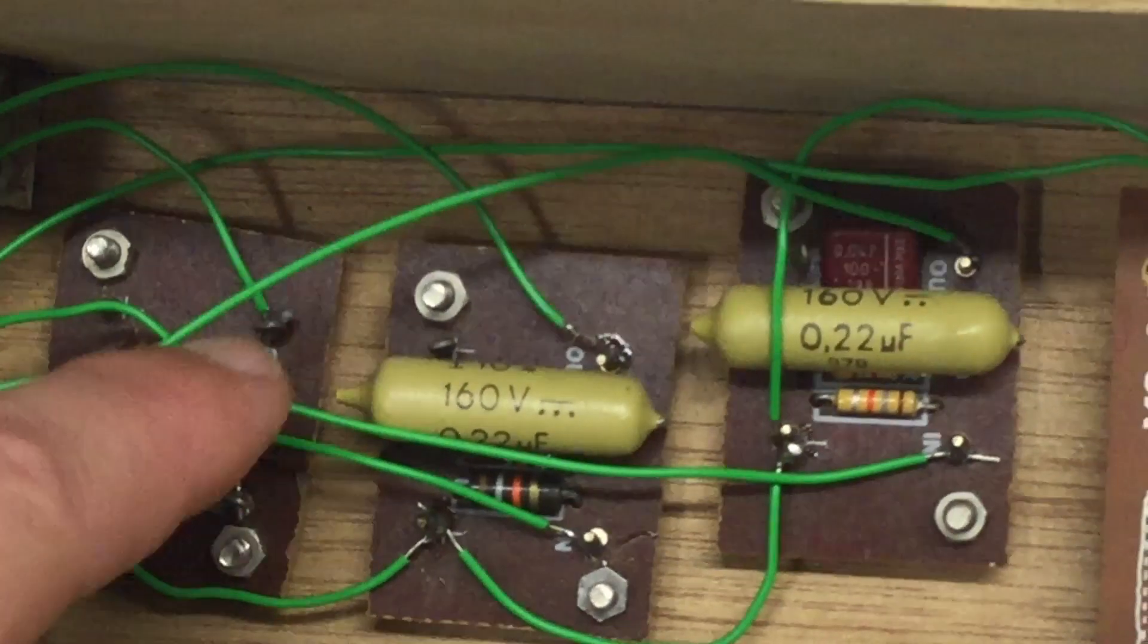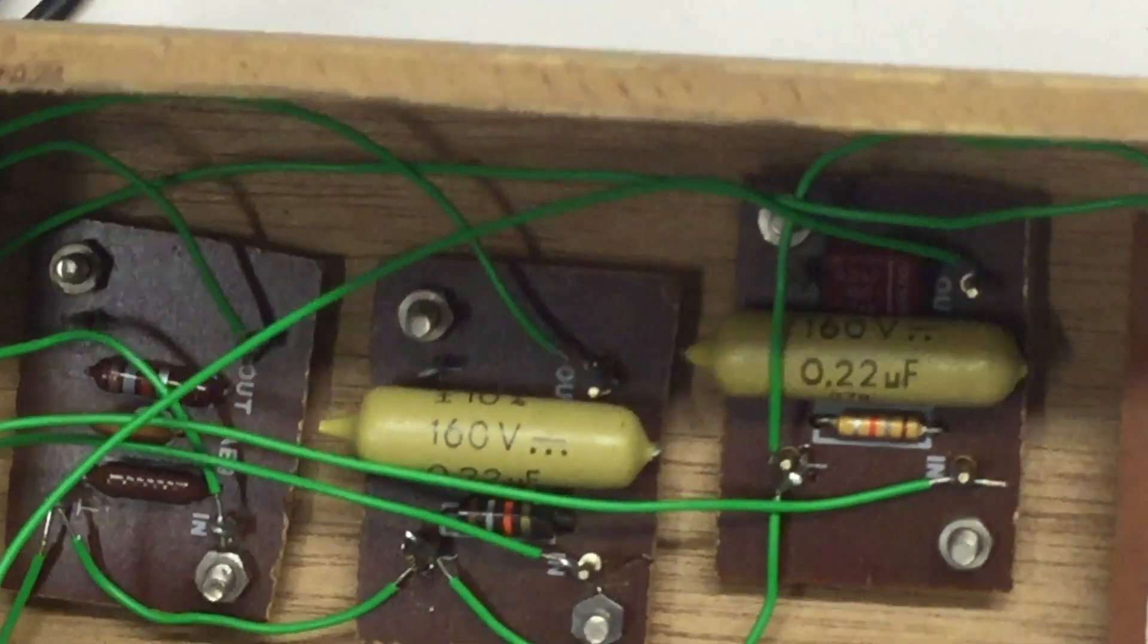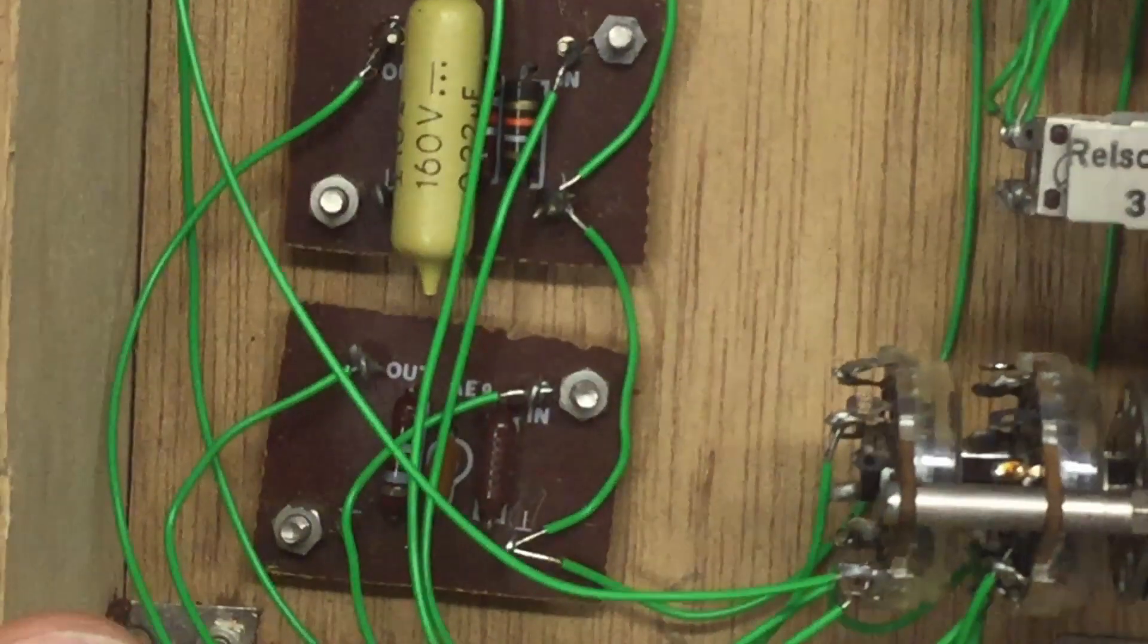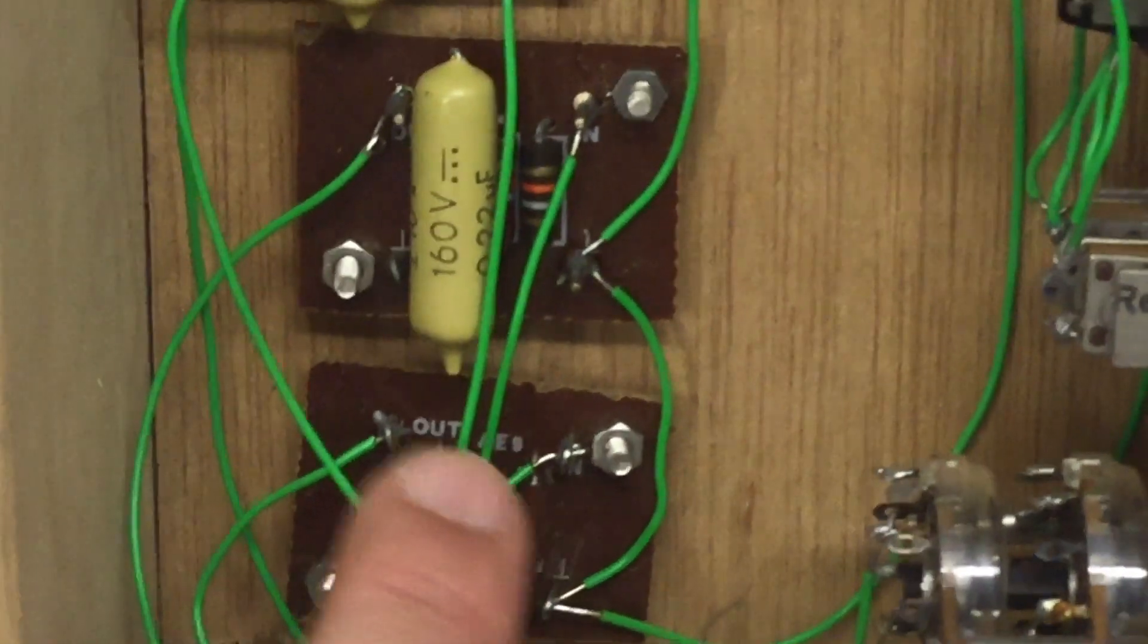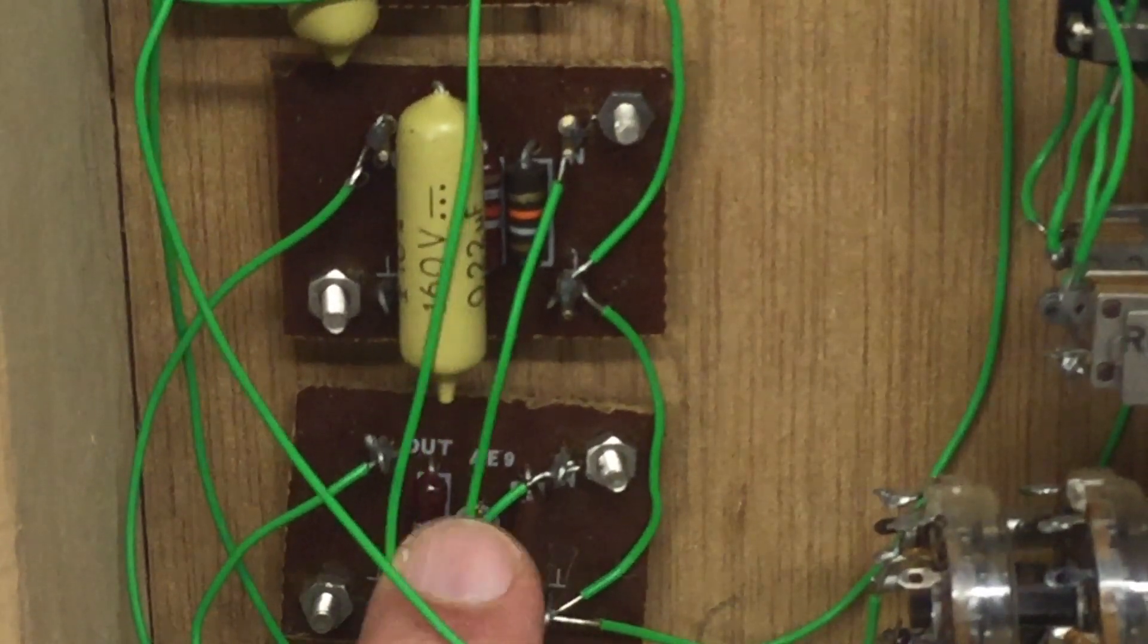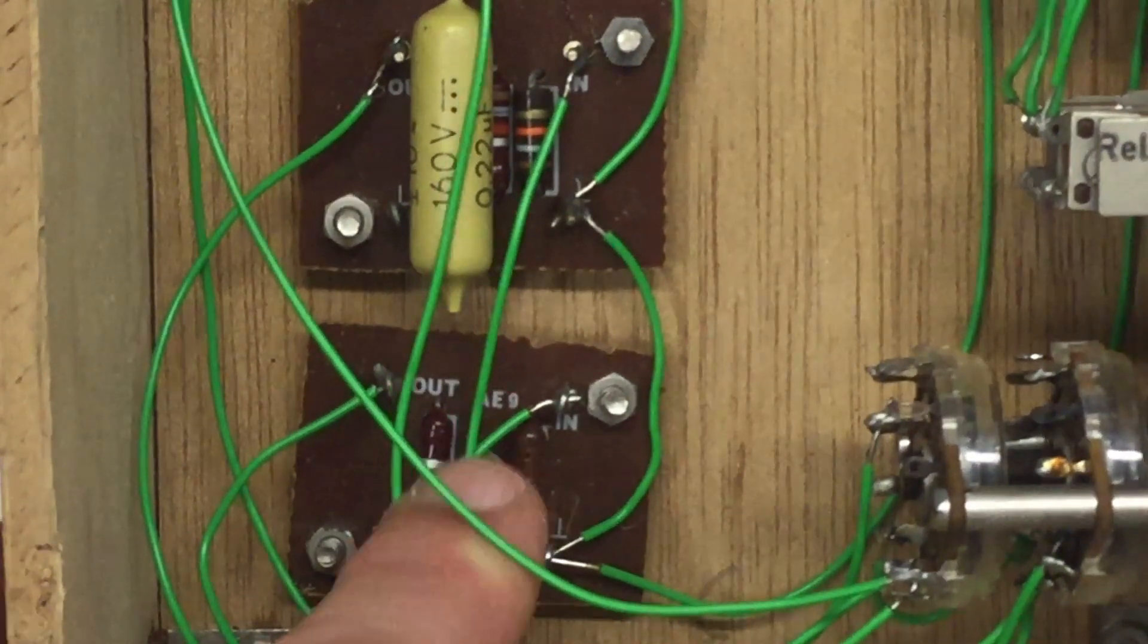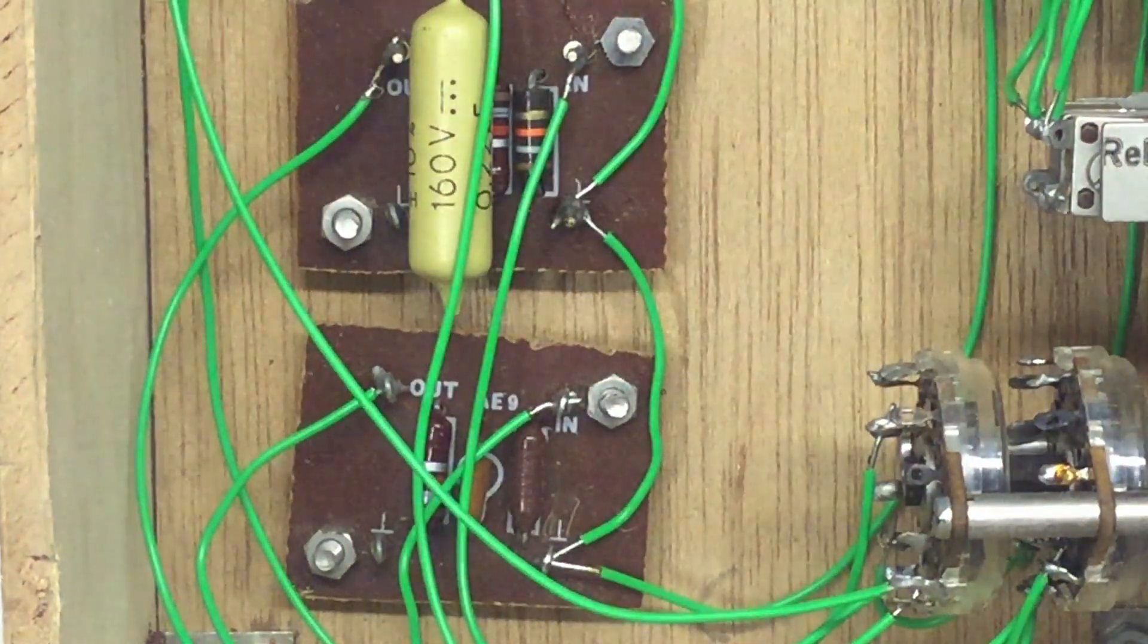But then they all have two capacitors and two resistors. I see something here, a label. Oh, this is going really back. AE E9, so AE stands for Amateur Electronics. My stone focused on there, pretty much.